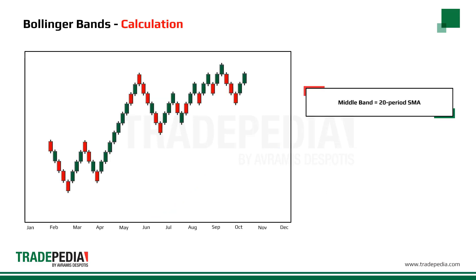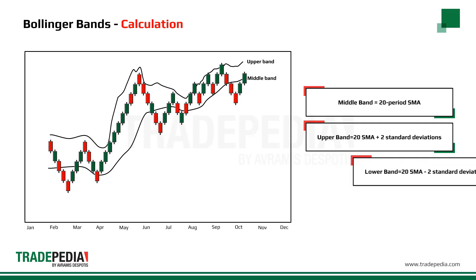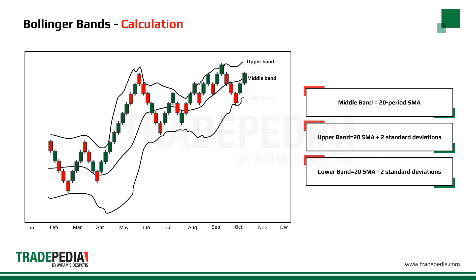The middle band is the 20-period simple moving average. The upper band is plotted two standard deviations above the 20-period simple moving average. The lower band is plotted two standard deviations below the 20-period simple moving average.